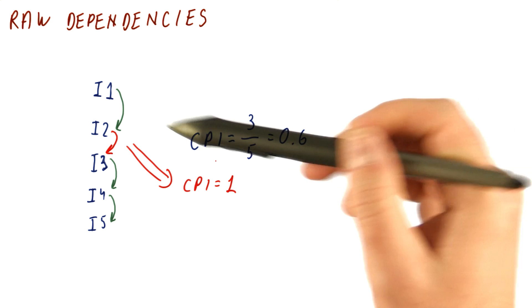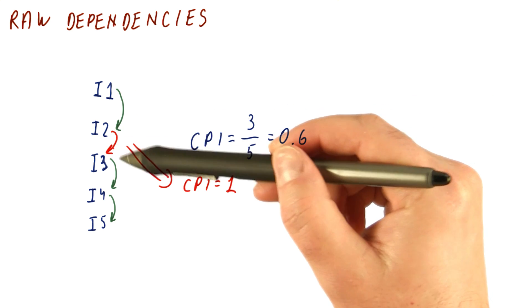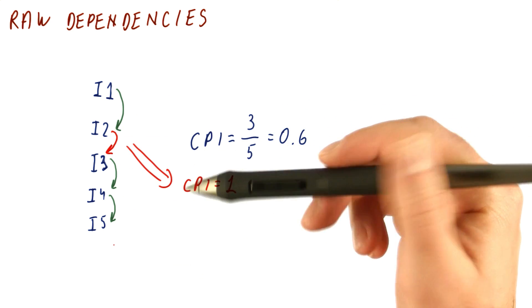We have a CPI of one if you have any number of instructions that are all dependent on the previous instructions, so you really cannot do anything in parallel.